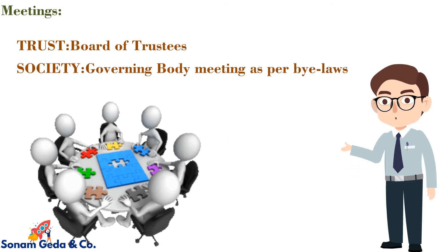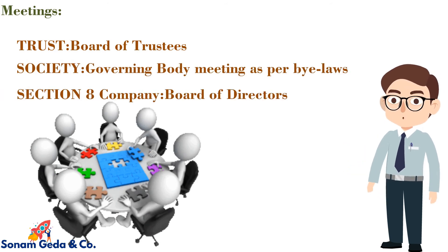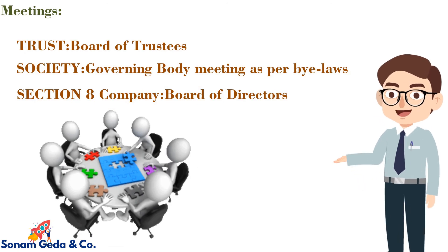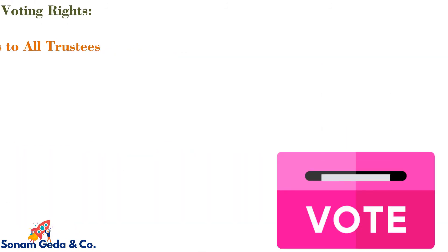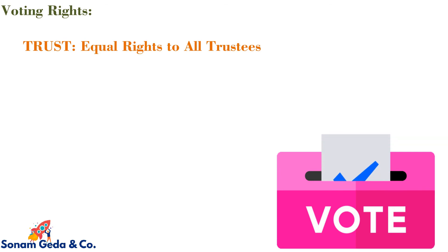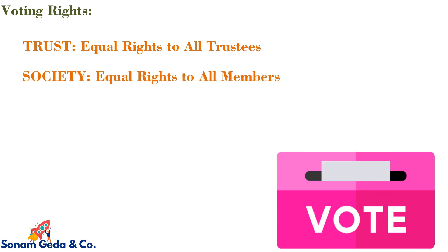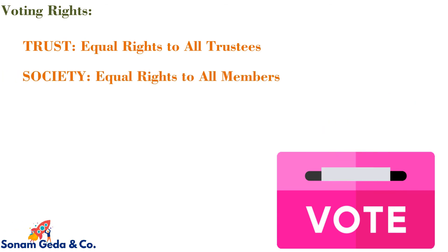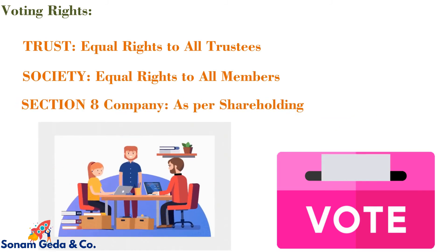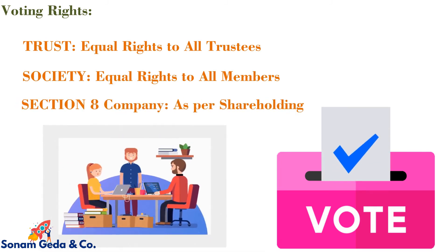Meetings: in the case of a Trust it is the Board of Trustees; in the case of a Society it is the governing body meeting as per bylaws; and in the case of a Section 8 Company it is the Board of Directors. Voting rights: in the case of a Trust there are equal rights to all trustees; in the case of a Society there are equal rights to all members; and in the case of a Section 8 Company voting rights are provided as per shareholding.